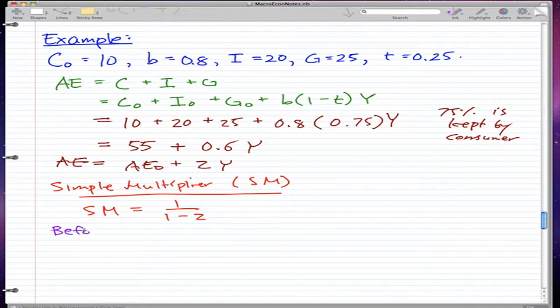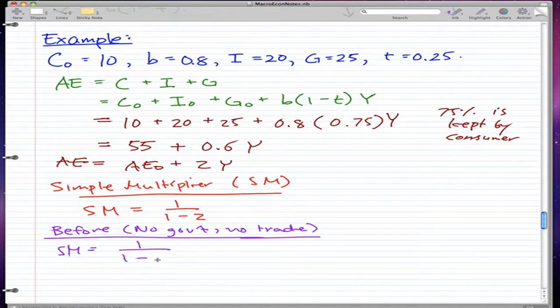Remember that before, before when we had no government, no government and no trade. When we had no government and no trade, the SM or simple multiplier was 1 over 1 minus 0.8. And that is equal to 1 over 0.2 equals 5.